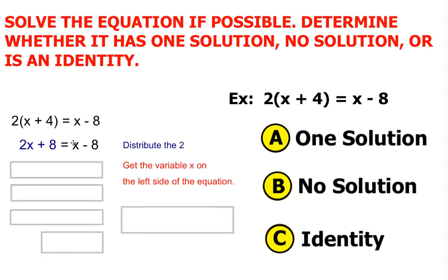So that means I'm going to have to get rid of this positive x on the right side. So how do I get rid of a positive x? All I would have to do is subtract x on both sides. My equation then becomes x plus 8 is equal to negative 8.